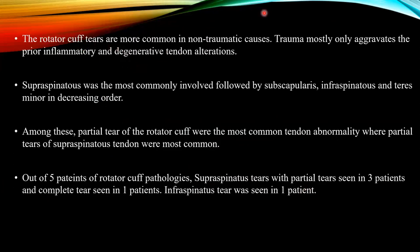Rotator cuff tears are the most common non-traumatic cause, as minor trauma can aggravate prior inflammatory and degenerative tendon changes. Supraspinatus was the most commonly involved tendon, followed by subscapularis, infraspinatus, and teres minor in decreasing order. Partial tears of the rotator cuff were the most common tendon abnormality. Out of five patients, supraspinatus partial tear was seen in three patients, complete tear in one patient, and infraspinatus tear in one patient.